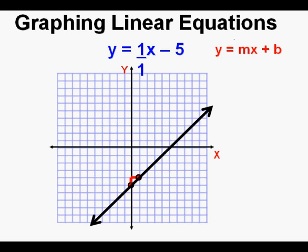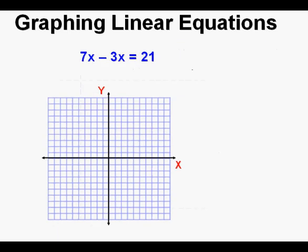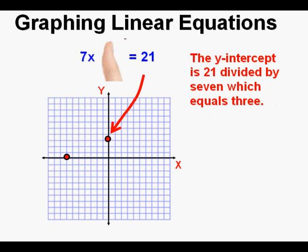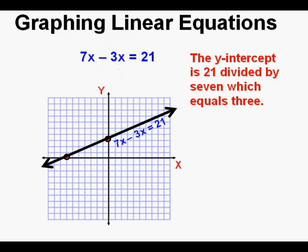Let's review. If you have an equation in standard form like this one, you can graph it with two points. Cover the y-term, then solve for x, which gives the x-intercept — here that's 21 divided by negative 3, which equals negative 7. Mark the x-intercept on the x-axis. Next, cover the x-term and solve for y, which gives the y-intercept — here that's 21 divided by 7, which equals 3. Mark the y-axis at y equals 3. All that remains is to draw the line through the two points.